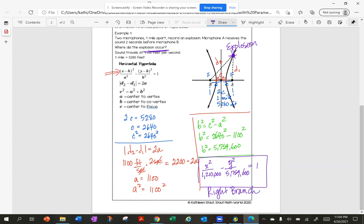So for a horizontal hyperbola, I have the right and the left branch. For a vertical, I would have the top or the bottom branch.